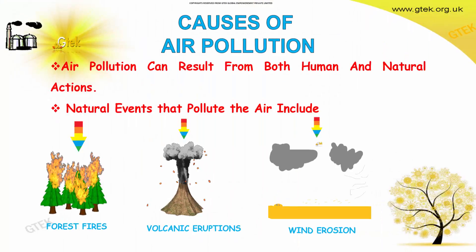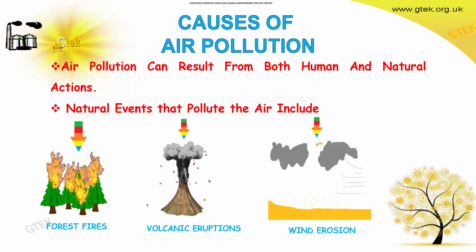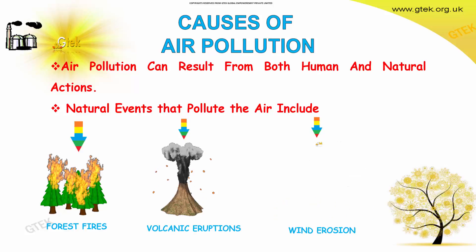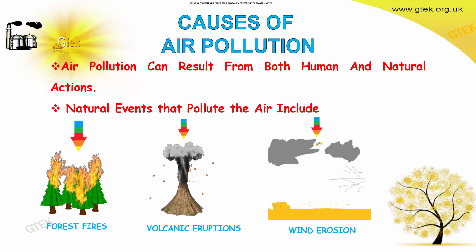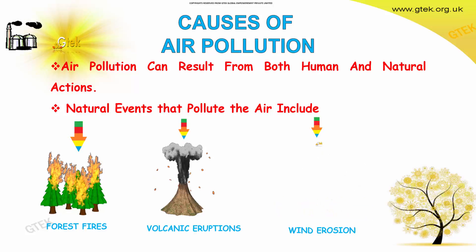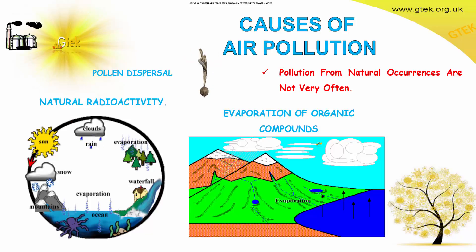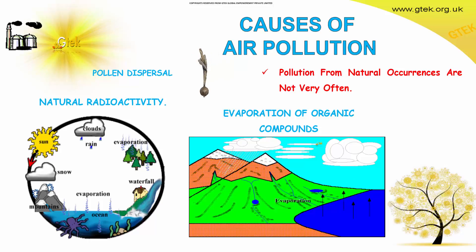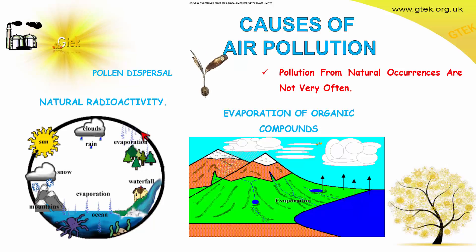Talking about the causes of air pollution — air pollution happens due to both human and natural actions. Natural events that pollute the air include forest fires, volcanic eruptions, wind erosion, natural radioactivity, and evaporation of organic compounds. However, pollution from natural occurrences is not frequent; it's quite rare.